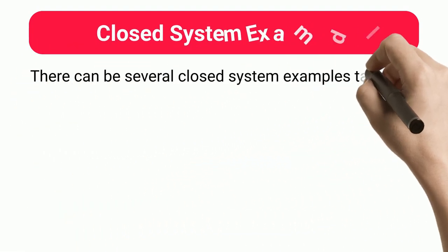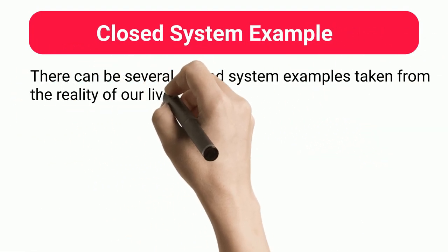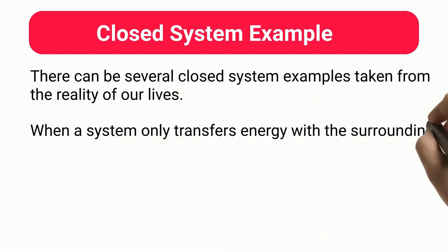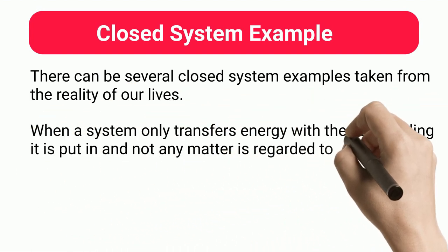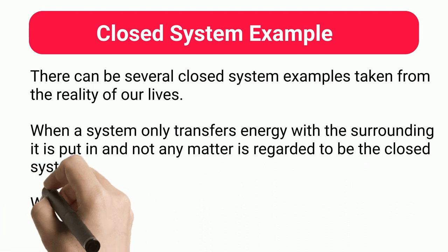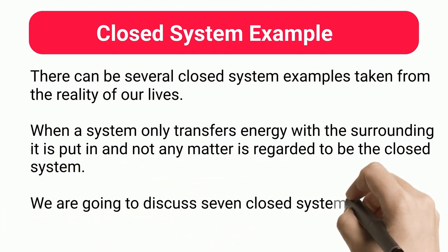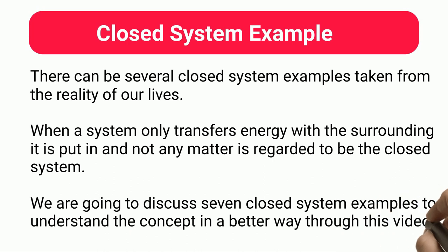There can be several closed system examples taken from the reality of our lives. When a system only transfers energy with the surrounding it is put in, and not any matter, it is regarded to be a closed system. We are going to discuss 7 closed system examples to understand the concept in a better way through this video.